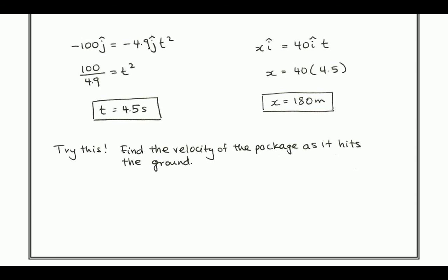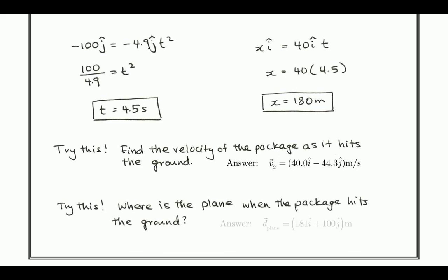First question, find the velocity of the package as it hits the ground. So what speed does it have as it hits the ground? You can check your answer against this, which would be 40 i-hat minus 44.3 j-hat meters per second. And where is the plane when the package hits the ground? So what are its coordinates when the package hits the ground? And of course, you can compare your answer to this answer, which is 181 i-hat plus 100 j-hat meters, which is basically right above where the package lands, 100 meters above where the package lands.